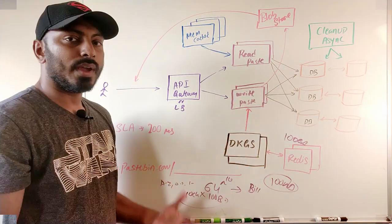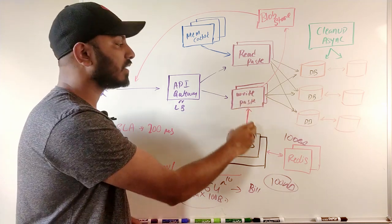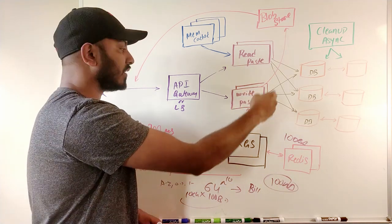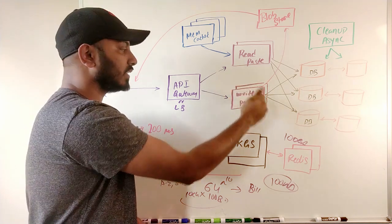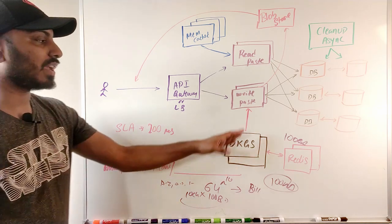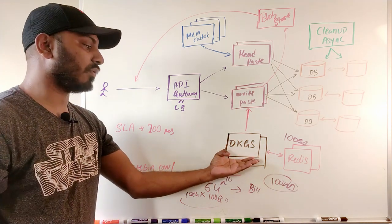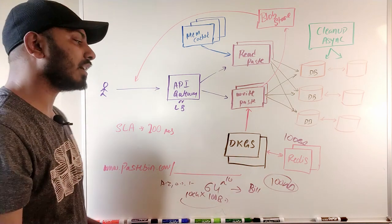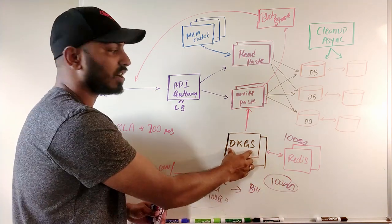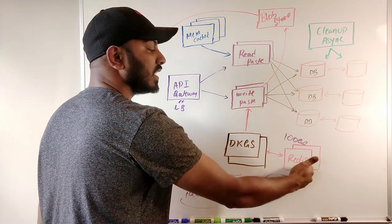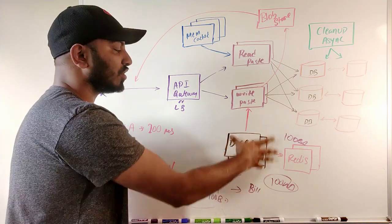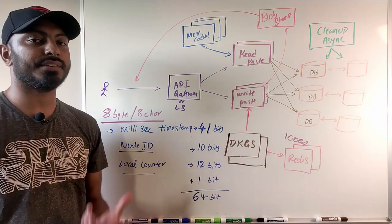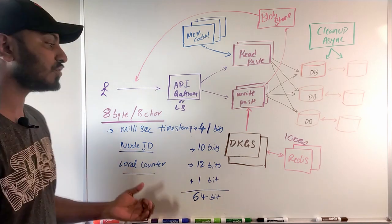Even with billions of keys, the memory needed is minimal — 10 characters per key means the total storage won't exceed around 100 GB in Redis, which is negligible. Write services can request hundreds of keys at once from the KGS, which marks them all as used, reducing the number of calls to the KGS. The KGS is also replicated in a master-slave architecture, so if one node goes down, another takes over.